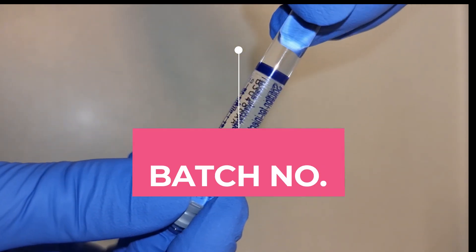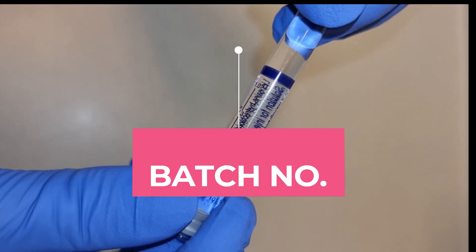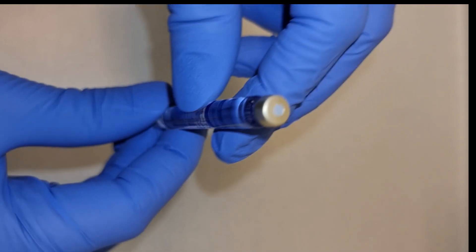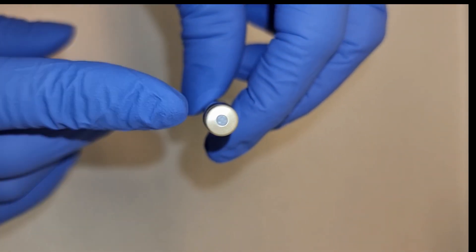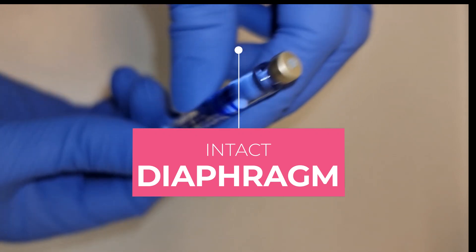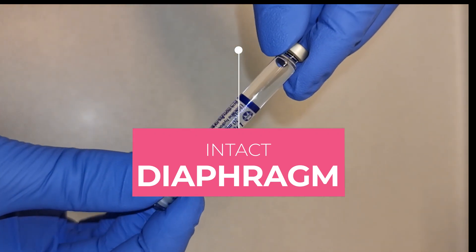Then you've got the batch number—it's important to record the batch number. And then you also make a final check to make sure that the diaphragm is intact to ensure there has been no tampering of the cartridge itself.